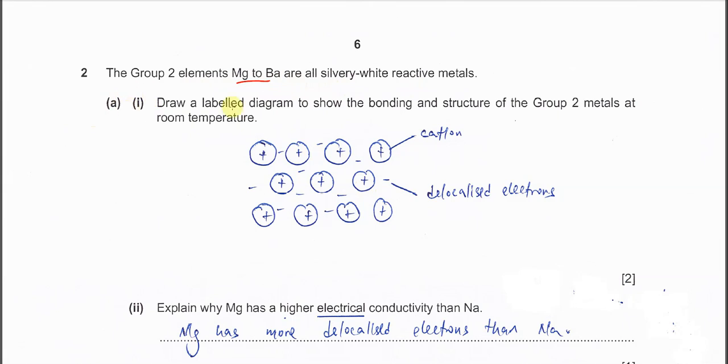Part A(i), draw a labelled diagram to show the bonding and structure of the Group 2 metals. This question you just need to draw four to six particles.